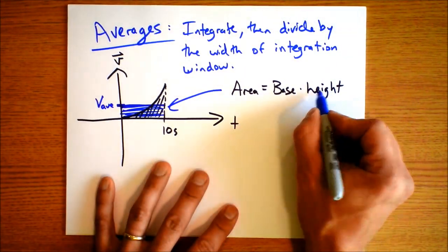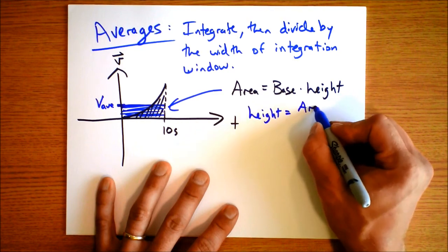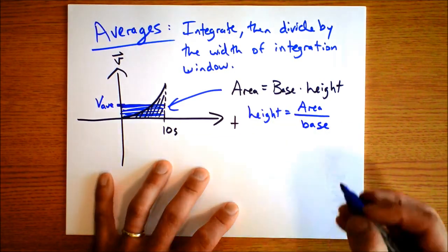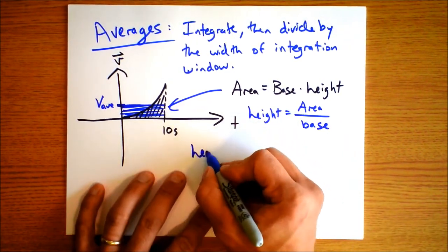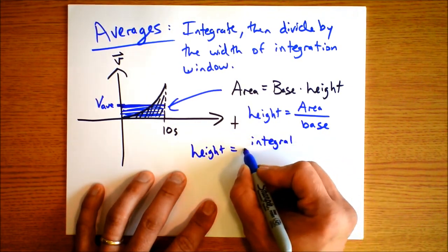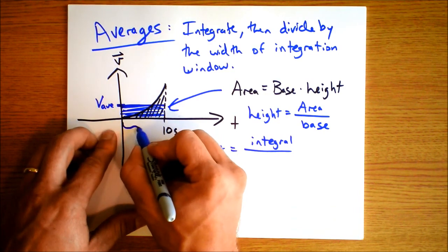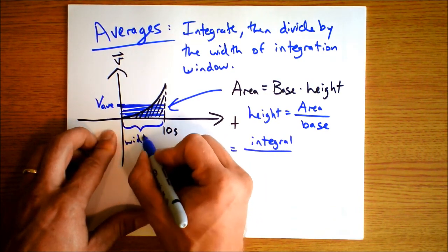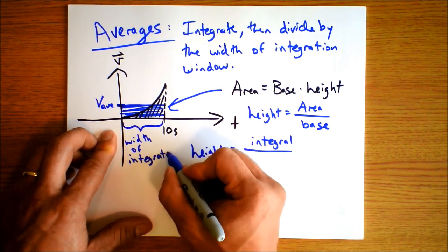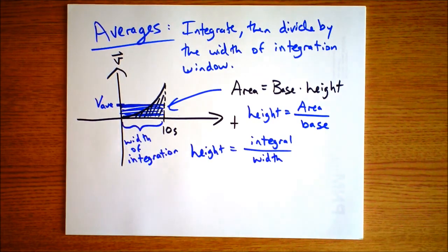That's that level right there. The height of the rectangle is a rectangle whose area is equal to the area underneath the curve between 0 and 10 seconds. That defines the average velocity. And if we want to find the height from this equation right here, why that's pretty simple, height is equal to area divided by base. And the cool thing is area is the integral. So height is equal to the integral divided by the width of the window.